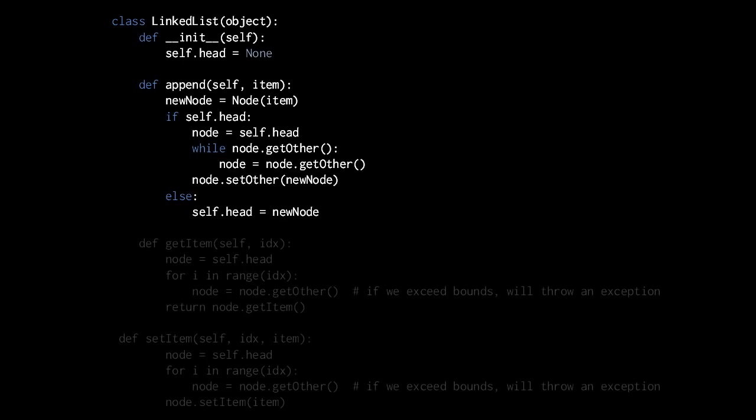As long as node.getOther returns a node — which will test true — rather than none, which will test false, the loop keeps executing and we keep assigning the next node to the variable node. Once the loop exits because we've hit the tail node, we invoke node.setOther with the new node. So now what was formerly the tail node is pointing to this new node, and the new node is the new tail node.